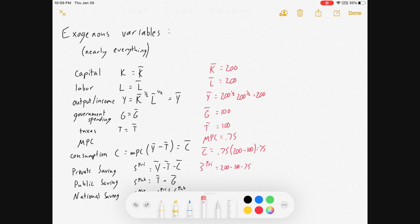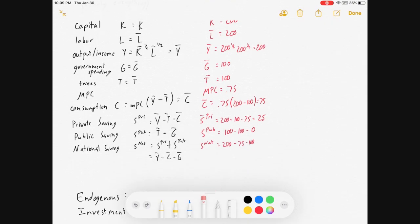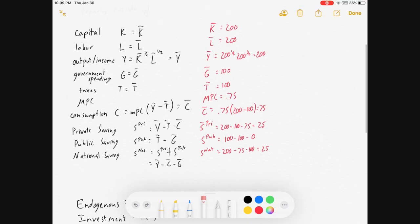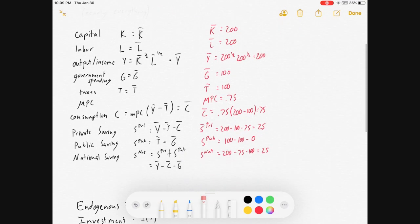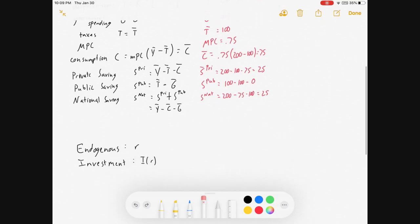Private savings then is income minus taxes minus consumption, which is 25. Public savings are taxes minus government spending, which is 0. National savings are income minus consumption minus government, which are 25. All right, so what did I do here? Honestly, I just had to remember what all of these equations were and all of these relationships. None of the math is very hard, but keeping it all straight can be challenging for some students.